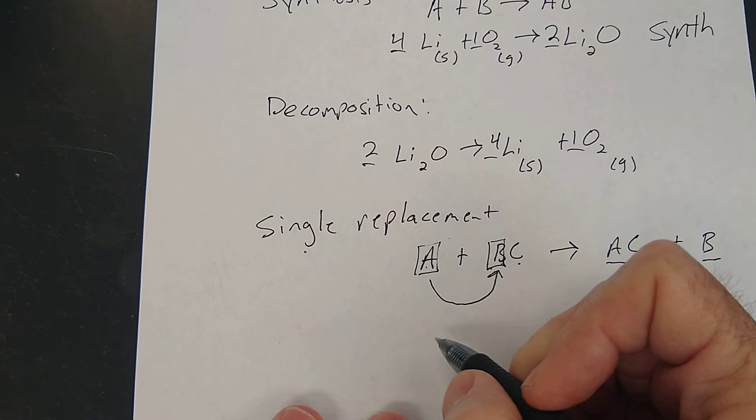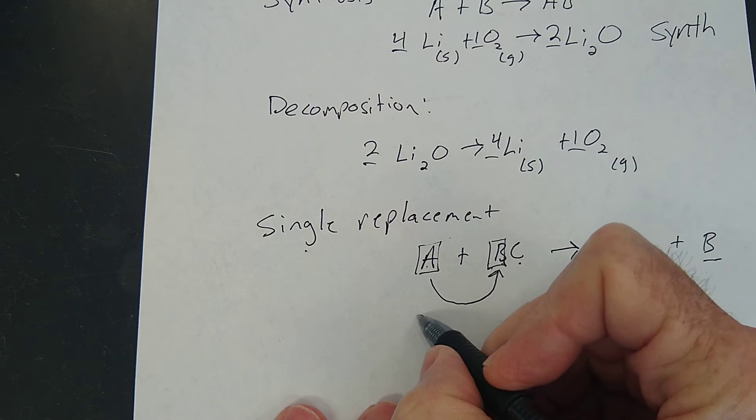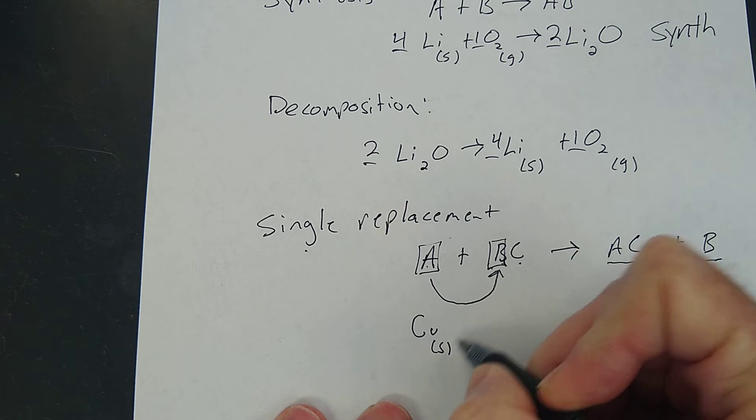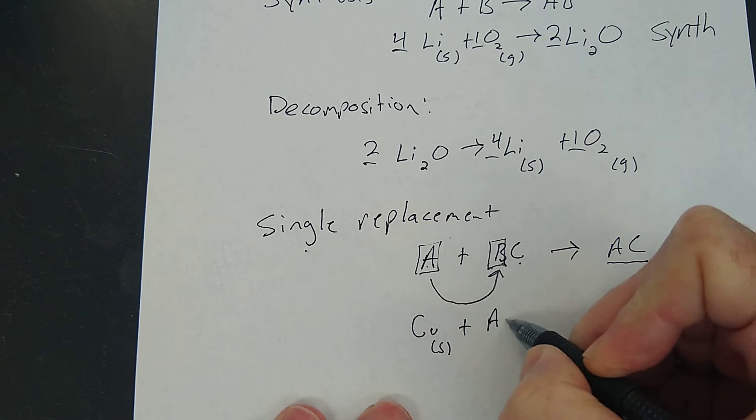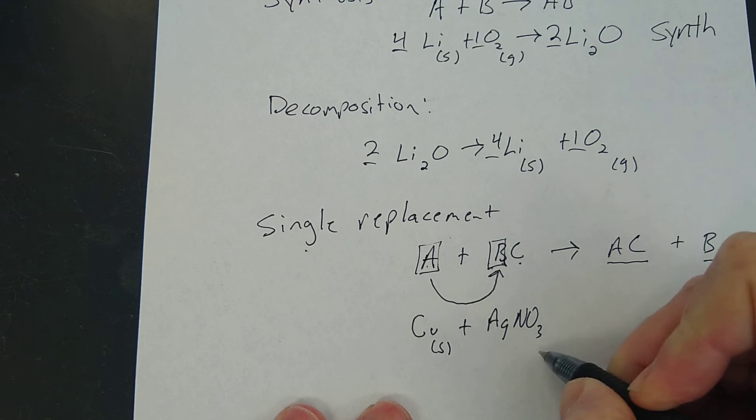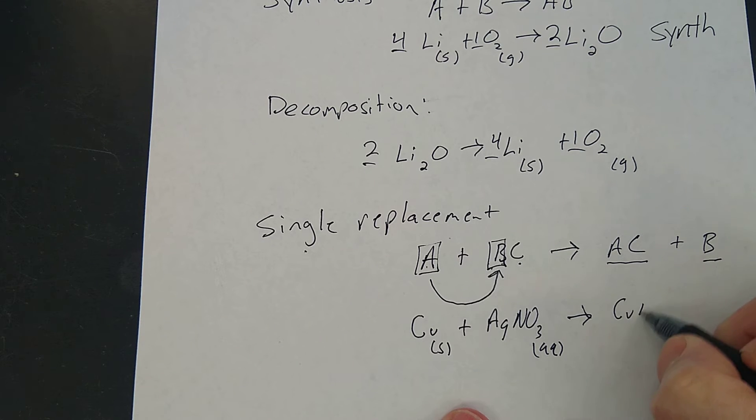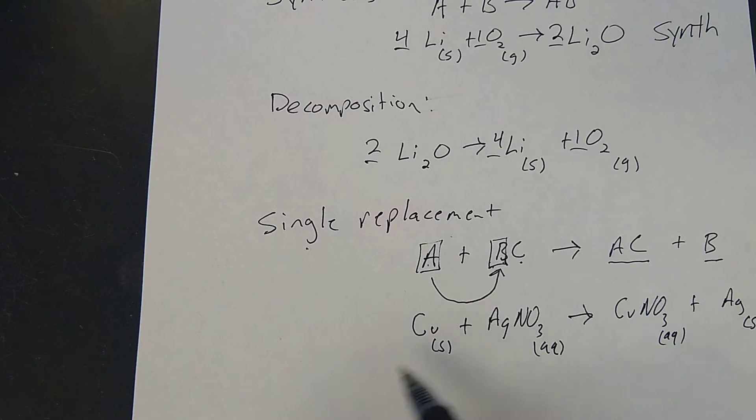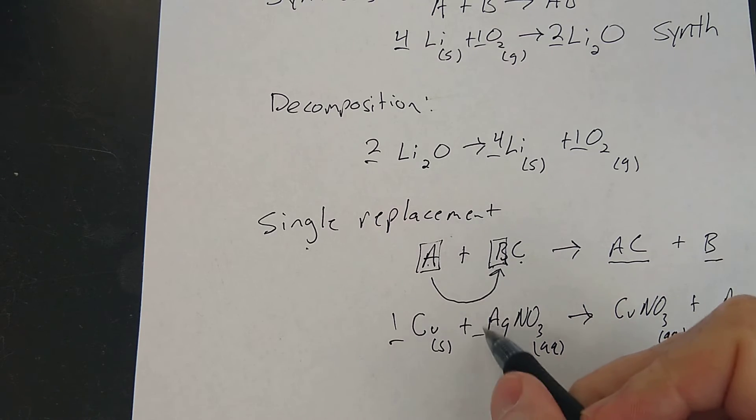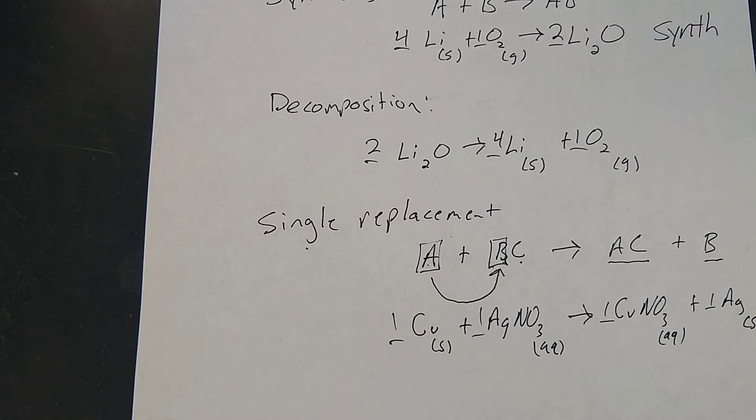One of these that we've done in class is we took some copper and we put it in some silver nitrate that was aqueous, like a solution of silver nitrate. And we ended up with copper nitrate and then the silver was by itself. And if this is copper one, this is already balanced. One, one, one, one. That's a single replacement.